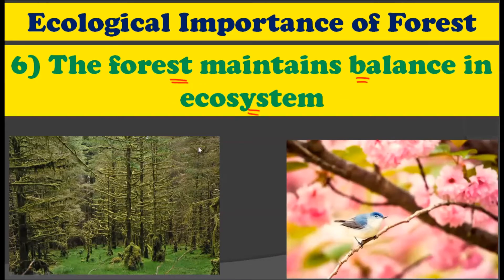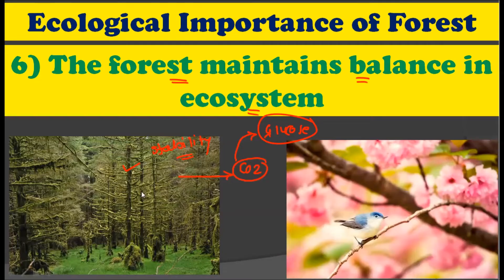The next ecological function of forest is to maintain the balance in an ecosystem. An ecosystem compulsorily requires stability, and this stability is provided by the forest. In the forest, there are a large number of plants which absorb CO2 for the purpose of photosynthesis. From the CO2, these plants prepare glucose, which is stored in the plants. In return, these plants give out oxygen, which is very vital for other living organisms. So the plants in the forest ecosystem maintain the accurate concentration of CO2 and O2 in the atmosphere — that is, forests tend to balance the CO2 and O2 ratio, which is just one example of how forests maintain the stability of the whole ecosystem.